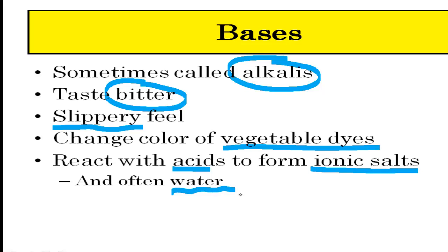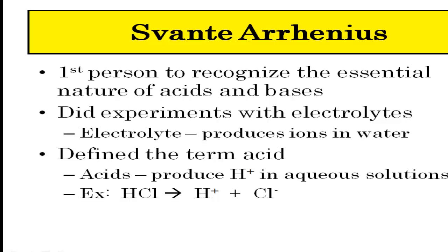Now let's talk about the definitions of acids and bases — what they truly are in chemistry. These definitions have changed over time. The first person to really recognize what an acid and base are was Svante Arrhenius. He was doing experiments with electrolytes, which are substances that produce ions in water.